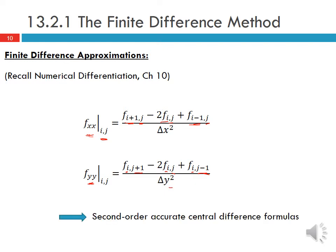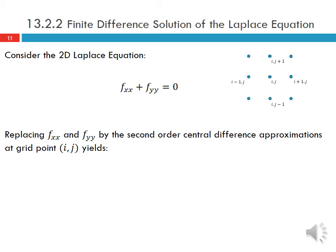These are the second-order accurate central difference formulas. Now let's consider the 2D Laplace equation: partial^2 f/partial x^2 + partial^2 f/partial y^2 = 0. With grid points centered at (i,j), moving in the x direction gives (i+1) and (i-1), and moving in the y direction gives (j+1) and (j-1). We replace f_{xx} and f_{yy} by the second-order central difference approximations at grid point (i,j).